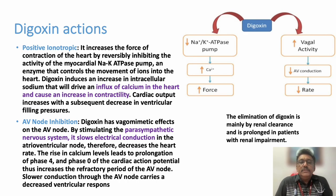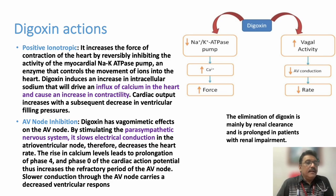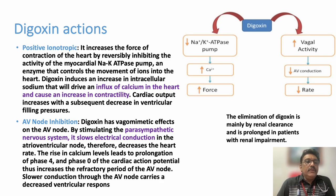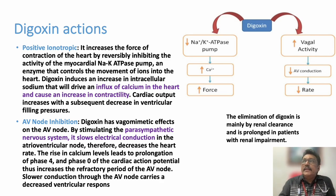The use is now restricted to atrial fibrillation with cardiac failure because Digoxin decreases the rate, making it useful in tachyarrhythmias. Its two actions — positive inotropic action and AV node inhibition — are both useful in cardiac failure with tachyarrhythmias, which is why it is mainly indicated in cardiac failure with atrial fibrillation.